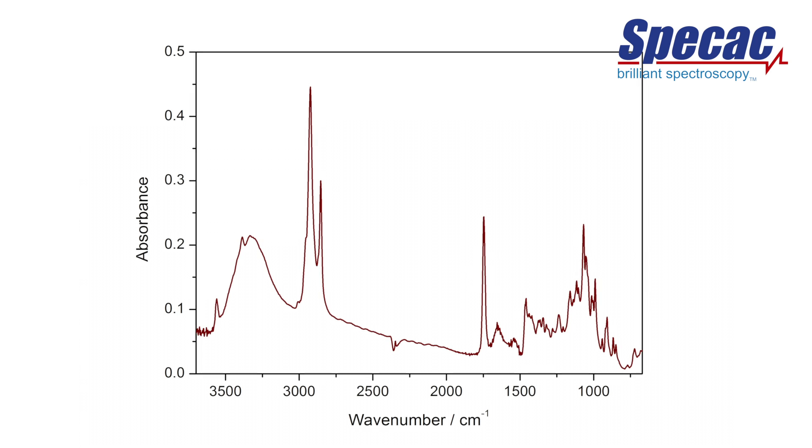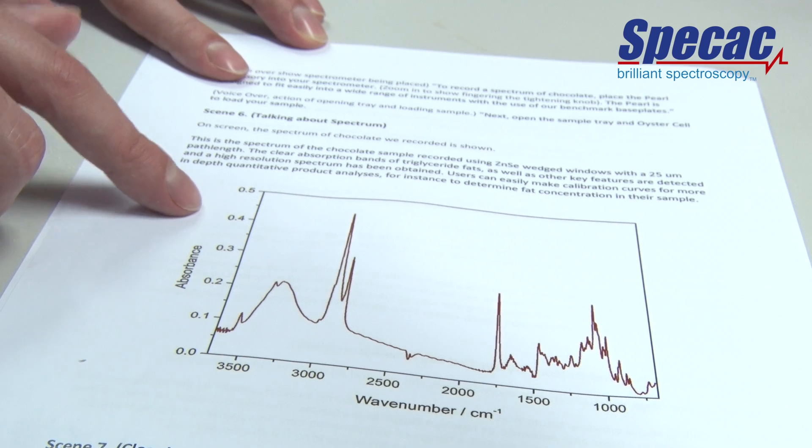This is the spectrum of the chocolate sample recorded using zinc selenide wedged windows and a 25 micrometer path length. The clear absorption bands of triglyceride fats as well as other key features are detected and a high resolution spectrum has been obtained.